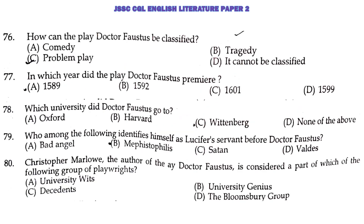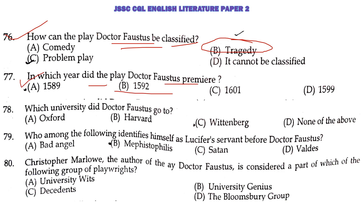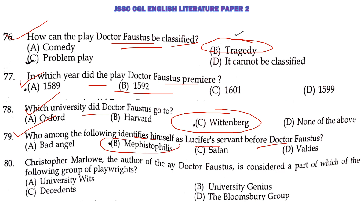Question 76: how can the play Dr. Faustus be classified? I will go for tragedy. A tragic hero's features — catharsis, hamartia, peripeteia and anagnoresis — all the features of Dr. Faustus's play are fulfilled. In which year did the play Dr. Faustus premiere? The answer is 1592. Which university did Dr. Faustus go to? The answer is Wittenberg. Who identifies himself as Lucifer's servant before Dr. Faustus? Mephistopheles is the right answer. Christopher Marlowe belonged to a very prestigious group of scholars from Oxford and Cambridge University, and that group's name was University Wits.